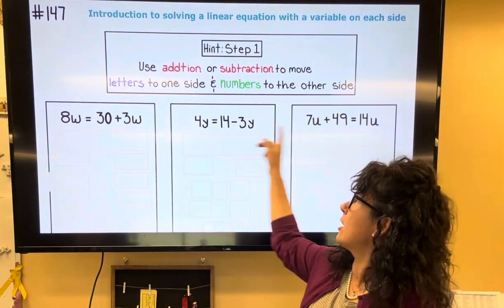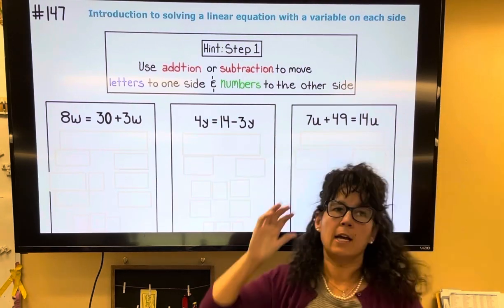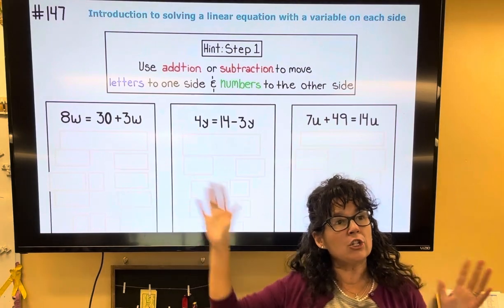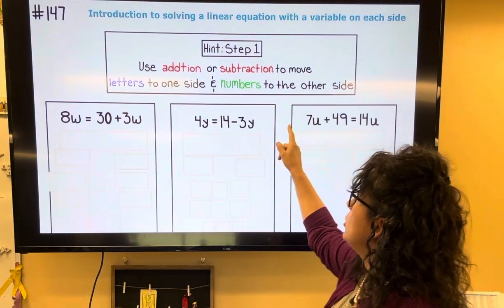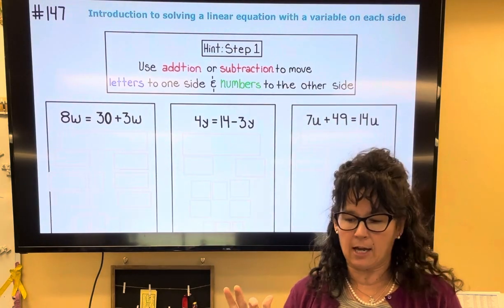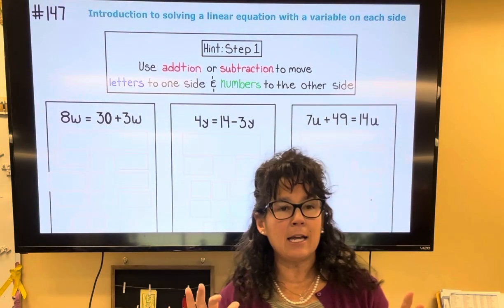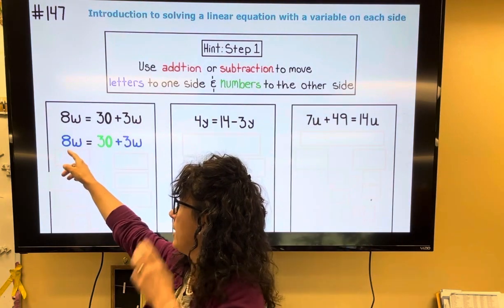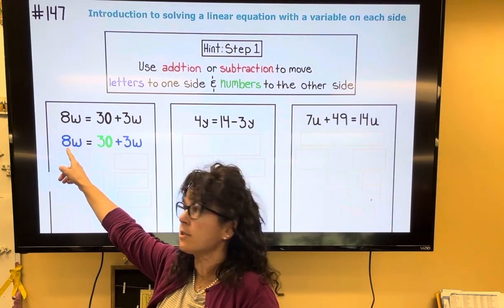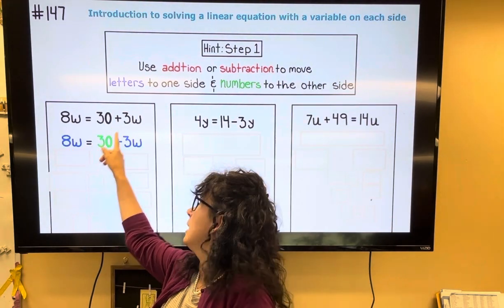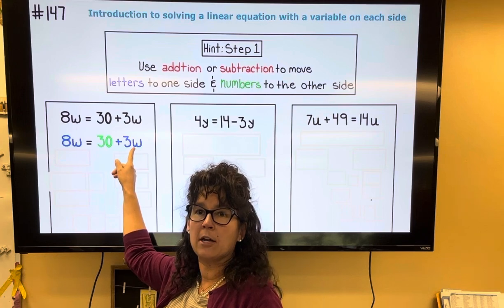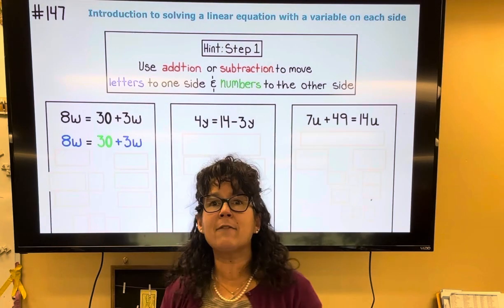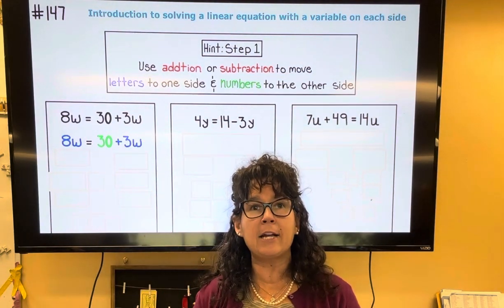We're going to solve these three equations. The hint here is the very first thing you want to do is use addition or subtraction to move the letters to one side and numbers to the other. I'm going to highlight numbers and letters to show what I mean. Starting with the first one: 8w — those are letters; 30 — that's a number; and 3w — that's a letter. Instead of saying letters and numbers, let's think of it as blue on one side, green on the other.